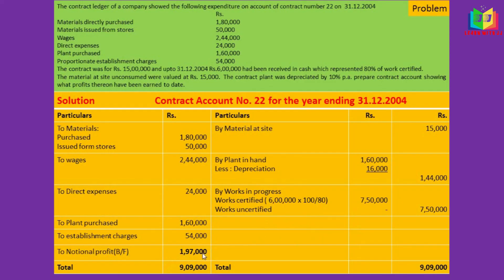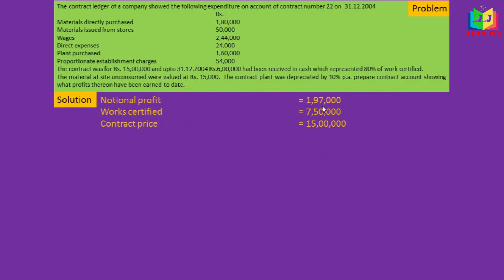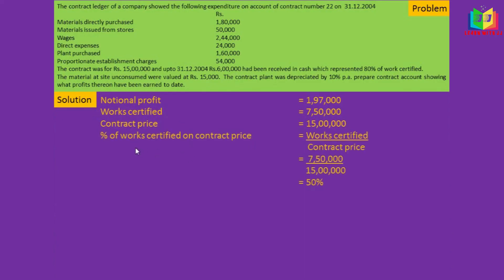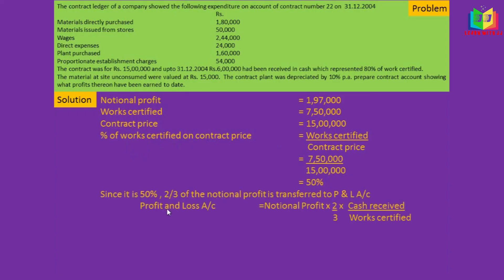This profit is to be transferred to profit and loss and reserve. Notional profit is 1 lakh 97,000, work certified is 7 lakh 50,000, and contract price is 15 lakh. The percentage of work certified on contract price is 50%, which falls under the third category. Since it is 50%, two-thirds of the notional profit is transferred to P&L account using the formula: P&L = Notional Profit × 2/3 × (Cash Received ÷ Work Certified). Substituting, we get 1 lakh 5,067 to be transferred to profit and loss account.